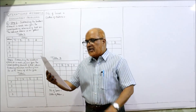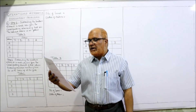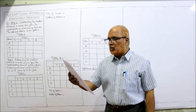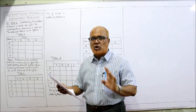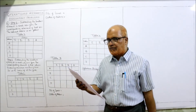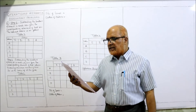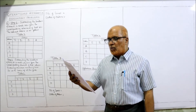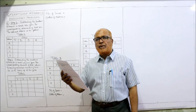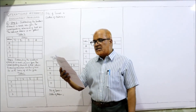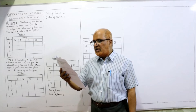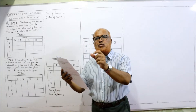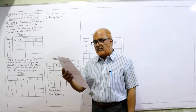Now see the 6th problem. Suggest optimum assignment of 4 workers A, B, C and D to 4 jobs 1, 2, 3, 4. One worker should be given one job — every worker should be given one job, so 4 workers, 4 jobs. The time taken by different workers in completing the different jobs is given below. Worker A will take 8 hours for job 1, 10 hours for job 2, 12 hours for job 3, and 16 hours for job 4. Like that, every worker's time for each job is given in the matrix.